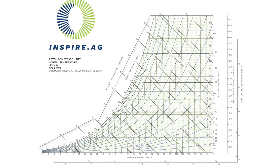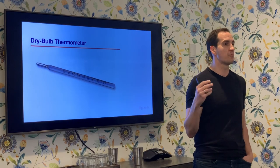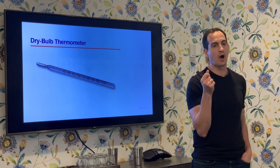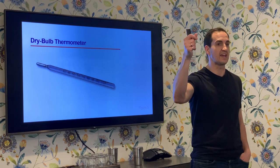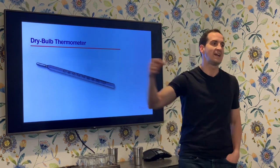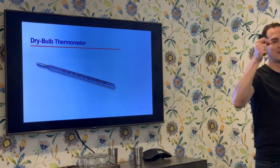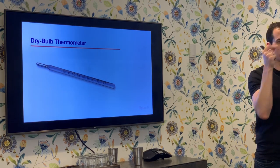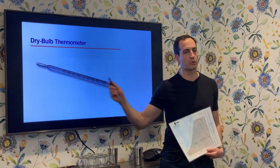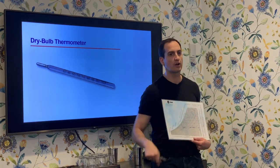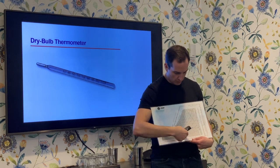A dry bulb thermometer is the thermometer you might be used to when someone took your temperature as a kid. It is dry on the outside — this bulb is dry — and it measures what we call the sensible energy of the air. It gives us the dry bulb temperature. Anytime you want to use this chart, you can use one of these thermometers — wave it around in the air and it will tell you where you are along the x-axis.